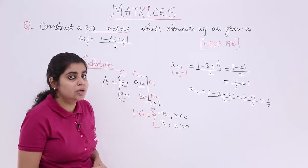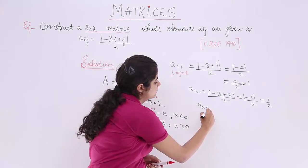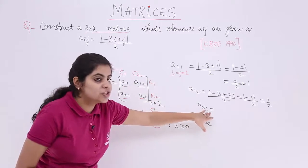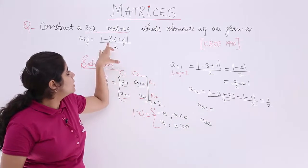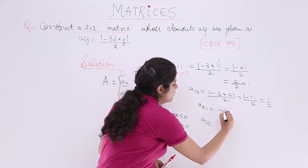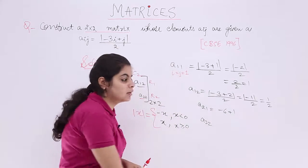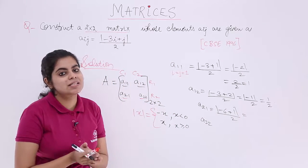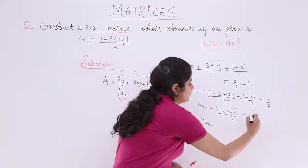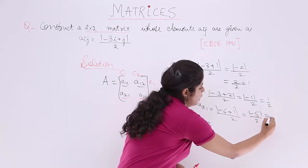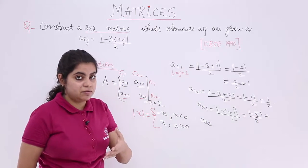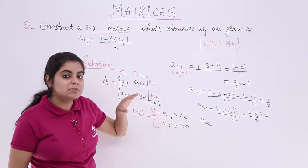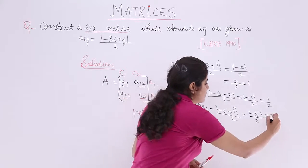I have A21 and A22. Let me take A21. A21 means i is 2, j is 1. Minus 3 into 2 is minus 6 plus j is 1, mod whole upon 2. What is minus 6 plus 1? Minus 6 plus 1 is minus 5 mod whole upon 2. Minus 5 is less than 0, so it should be minus x. That means minus of minus 5 which is plus 5. So 5 upon 2.